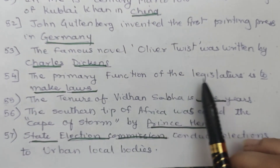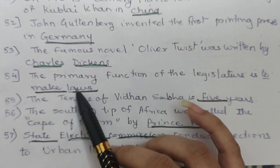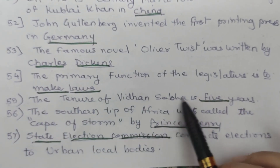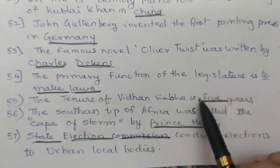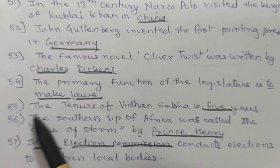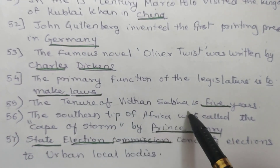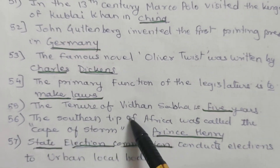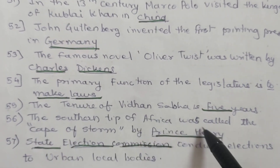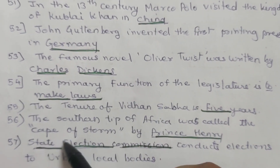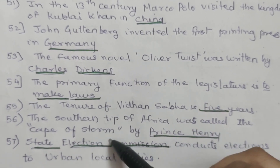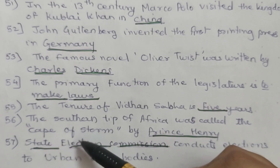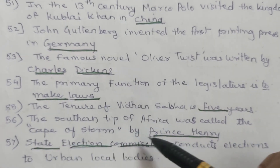54. The primary function of the legislature is to make laws. 55. The tenure of Vidhan Sabha is five years. 56. The southern tip of Africa was called the Cape of Storms by Prince Henry. 57. The State Election Commission conducts elections to urban local bodies.